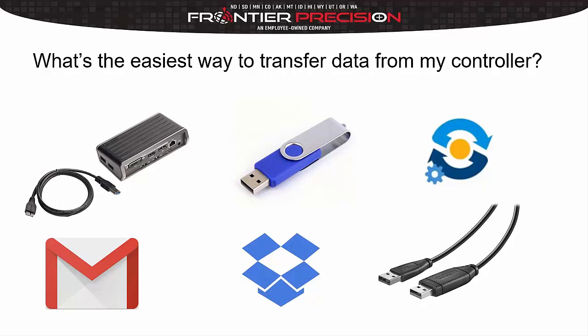Starting at the top left, this is the Trimble network hub or desktop hub. A USB cable plugs into your TSC7, the other end goes into this desktop hub box, and on the back there's a network cable that plugs into your desktop hub, which essentially connects your TSC7 or Windows 10 device to your local network.